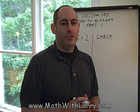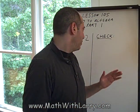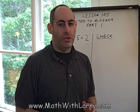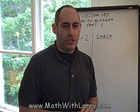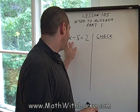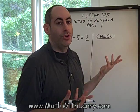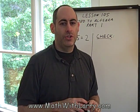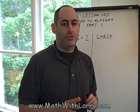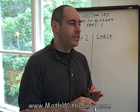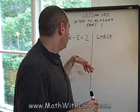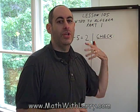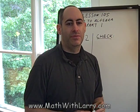In algebra, the general procedure is that we always want to isolate x on one side of the equal sign. Once x is by itself, we'll be able to see exactly what x is. So keep that in mind as you work in algebra — no matter how complicated it may look, we need to keep doing things in an effort to get x by itself.